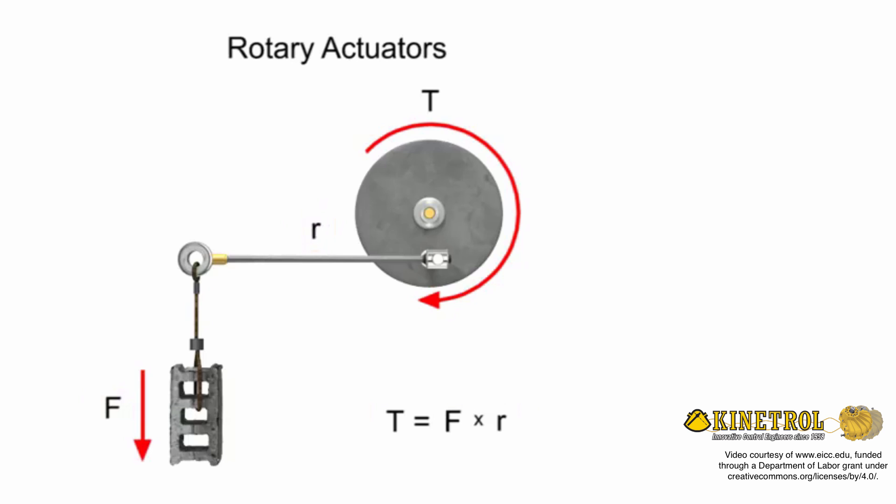Since rotary actuators operate at low speed with high torque, torque output rather than horsepower is used for rating and identification purposes. Speed is a secondary consideration when choosing a rotary actuator for a particular application. The typical units of measurement for torque are foot-pounds.